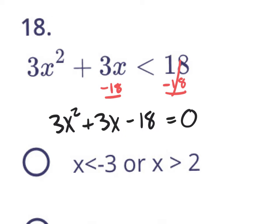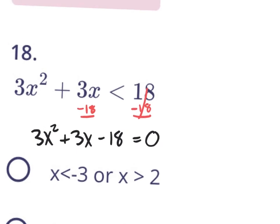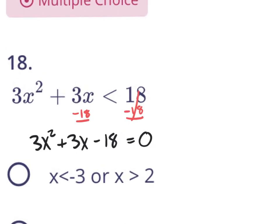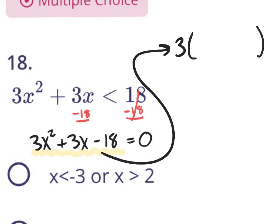So we're going to solve this quadratic equation. Maybe we could factor it, split it, and solve it. It might not be able to be factored, but I could see that we could pull out the GCF of 3. If we pull out the GCF of 3, what would be left on the inside of the parentheses? Well, you would have x squared plus 1x minus 6.